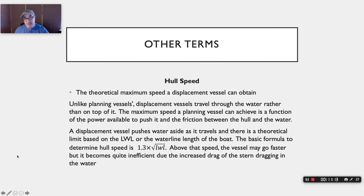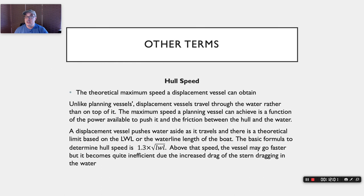Hull speed: for a planing hull, speed is limited by horsepower and water friction. But for a displacement boat — like a trawler designed to push through the water rather than get on top — there is a theoretical hull speed calculation. That formula is 1.3 times the square root of the length at the waterline. That's why the waterline length dimension we mentioned under specifications matters — you take the square root of the waterline length and multiply by 1.3 to get the theoretical hull speed.